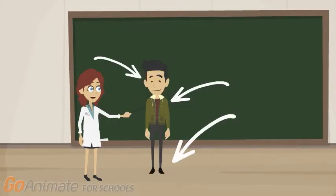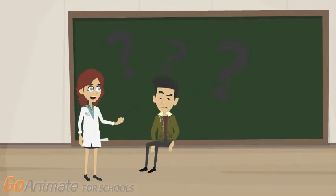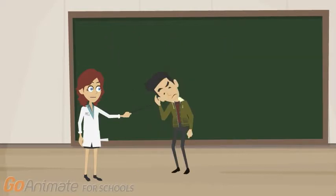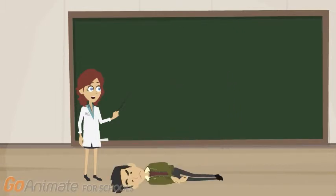Some symptoms of a stroke are a sudden numbness or weakness in the face, arm, or leg, especially on one side of the body. Abrupt confusion, trouble speaking, or difficulty understanding speech. A sudden severe headache with an unknown cause. Sudden trouble walking, dizziness, loss of balance, or lack of coordination, and having trouble seeing through one or both eyes.